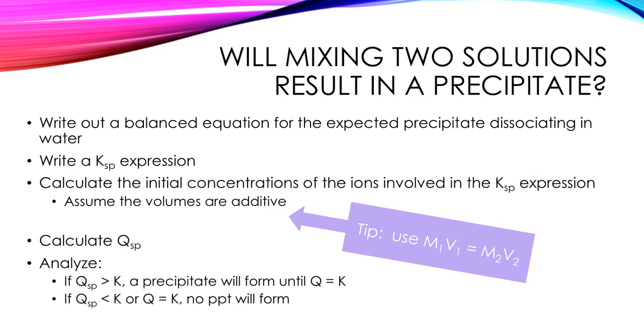And then we're going to compare our value of Q to the given value for K. If Q is bigger than K, I'll get a precipitate until Q and K are equal. If Q is less than K or equal to K, nothing's going to happen. No precipitate will form. And this is how we work through these problems.